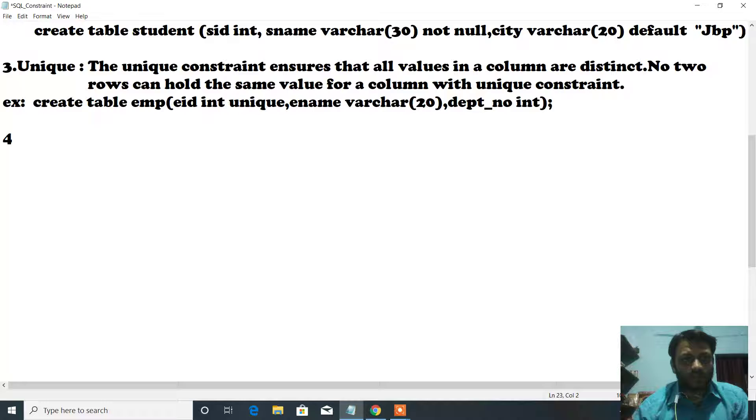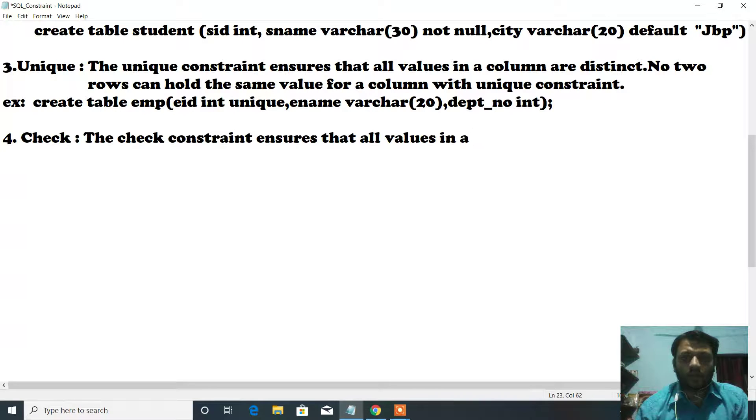This is our fourth constraint. The constraint name is check. So the definition is: the check constraint ensures that all values in a column satisfy certain conditions.